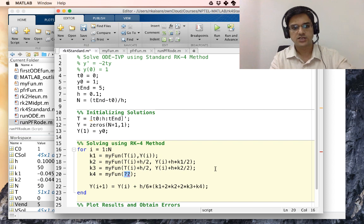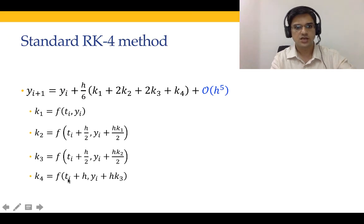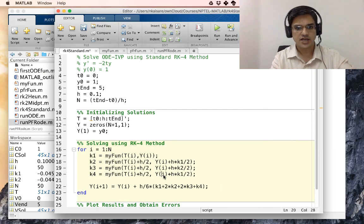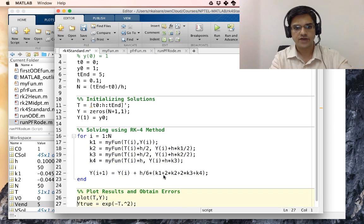Same thing, we will paste for K4 and let us see what change needs to be done. K4 is a function of T I plus H and YI plus H K3. So let us paste it, T I plus H and not T I plus H by 2, and YI plus H multiplied by K3 and not divided by 2. So we change K1 to K3 and remove divided by 2 and this is our YI.